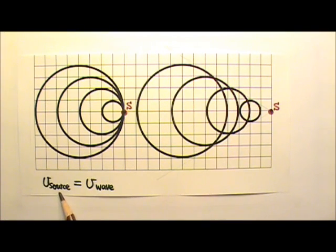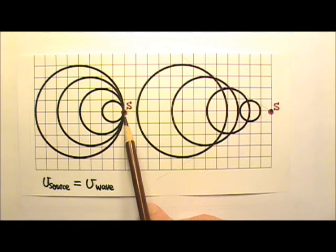When a wave source travels at the same speed as the wave, we get all the wave crests meeting at the wave source, producing very strong constructive interference at the source location.